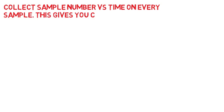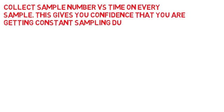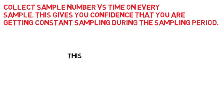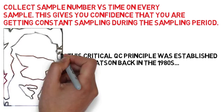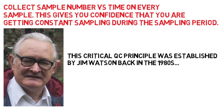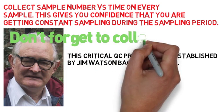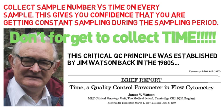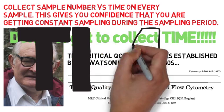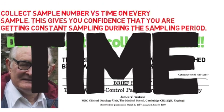It's important that you always collect sample number versus time on every sample, as this gives you confidence that you're getting constant sampling during the collection period. Many folks forget to collect these parameters, and you should make sure that you're not one of them. It's a critical QC principle established by Jim Watson back in the 1980s — go look up his work and take a look at his manuscript. Whenever you're making a histogram of a data set, make sure you also collect time so that you can verify your sample rate is stable.